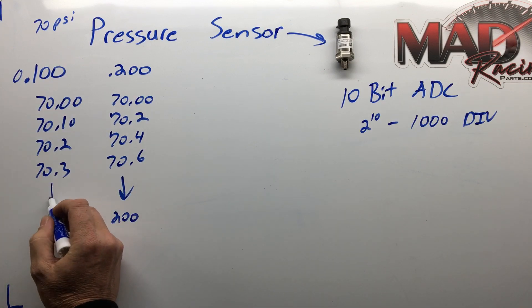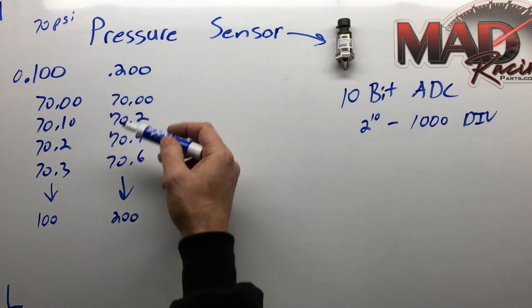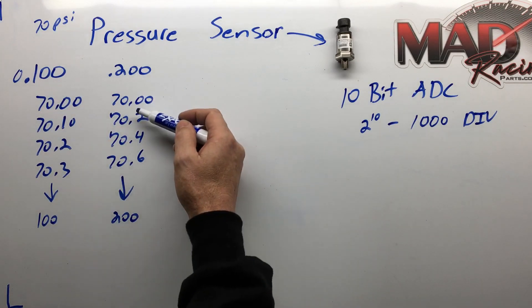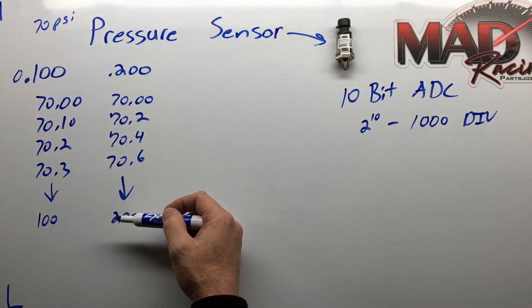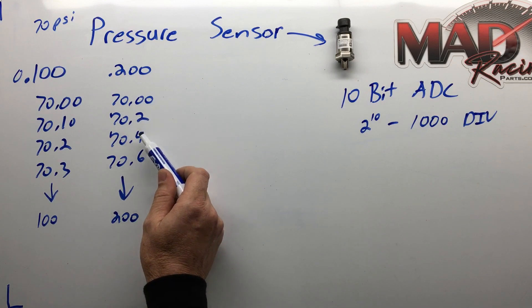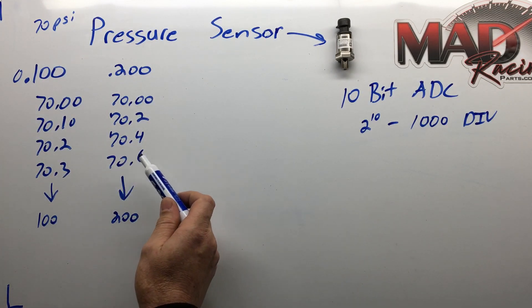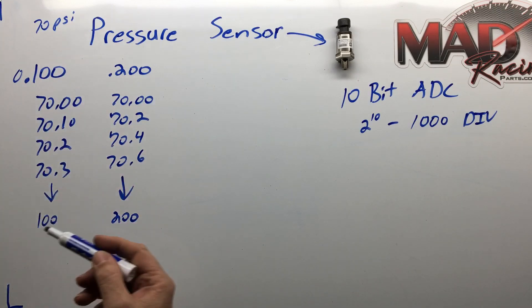This one's going to stop at 100. The number of divisions is the same. It's a thousand divisions from zero to 200, but the value of each increment is obviously higher on this one. We're going in 0.2 pound increments here and 0.1 pound increments for this one.